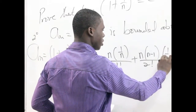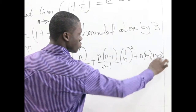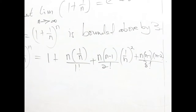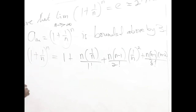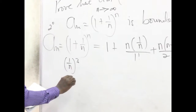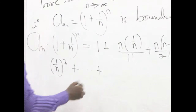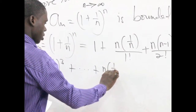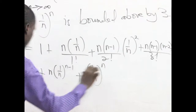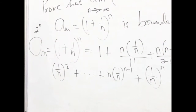We have (1/n)^2, then n(n−1)(n−2) over 3 factorial, multiplied by (1/n)^3, and this continues until we have the final term with n times (1/n)^n. So what we've done is expand this using binomial expansion.